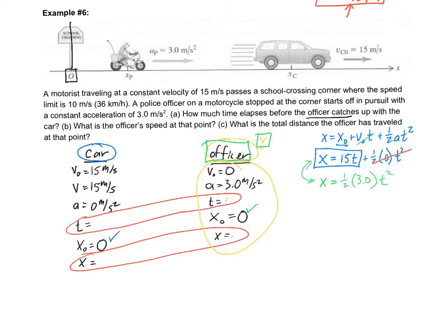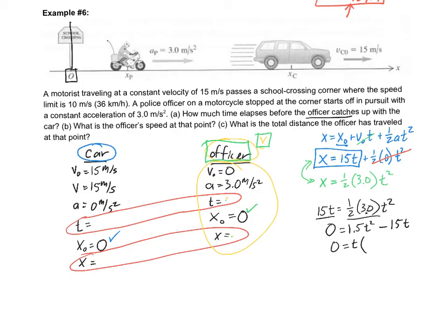I can do a direct substitution — plugging 15t in for x in the officer's equation: 15t = ½ × 3.0 × t², which gives 15t = 1.5t². Moving everything to one side: 1.5t² − 15t = 0. Factoring out t: t(1.5t − 15) = 0.